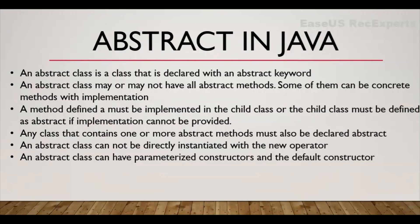If I declare a class abstract, it is possible that it may or may not contain any abstract method. An abstract method is a method where we do not provide any implementation — only the method signature is available, and that method must also be defined with the abstract keyword. Any class which is inheriting or extending the abstract class must implement all the abstract methods present in the parent class. In case the child class is not providing its own implementation of the abstract method, then that child class should be declared as abstract itself.